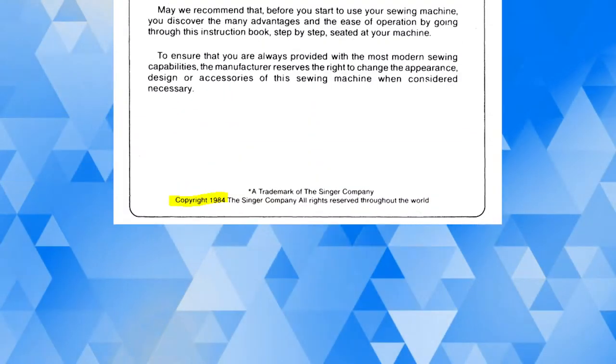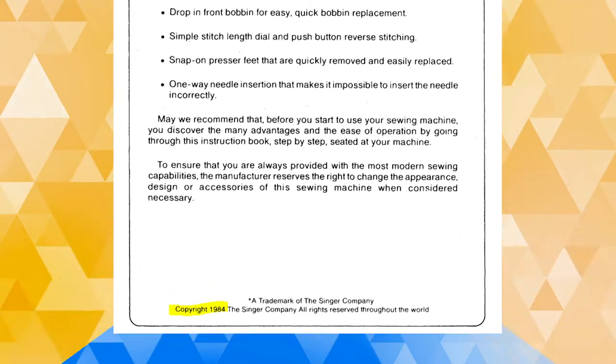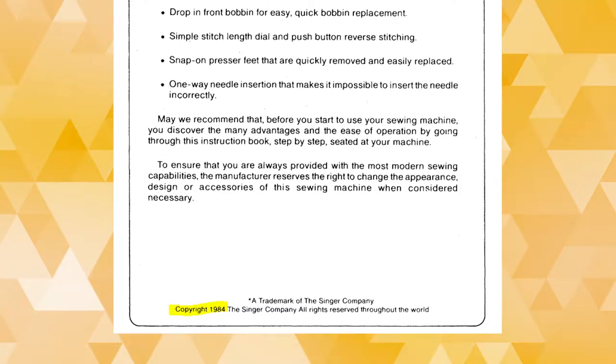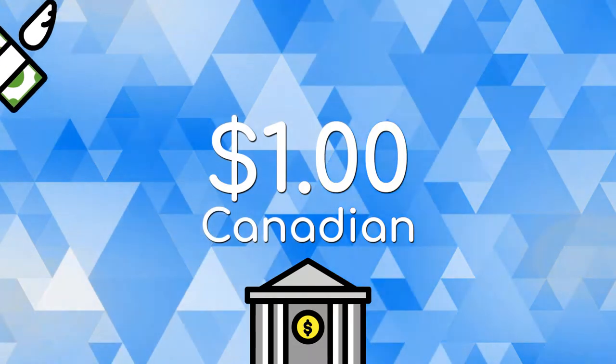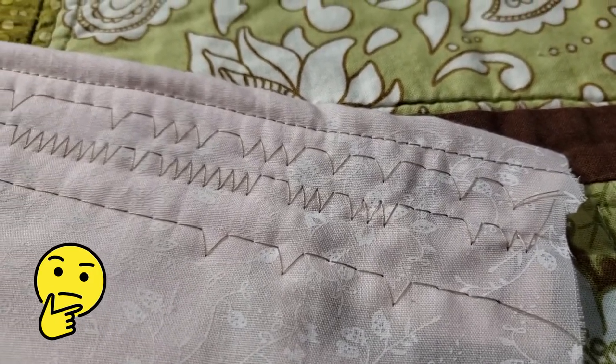According to the manual, the Singer 6215C sewing machine is from 1984, so it's currently one of the newest sewing machines in my vintage collection. I won this item in an auction for one Canadian dollar. I couldn't resist it when no one else bid on it. When I brought it home, the straight stitch function worked fine, but as soon as I switched it to the zigzag, I experienced skip stitches.